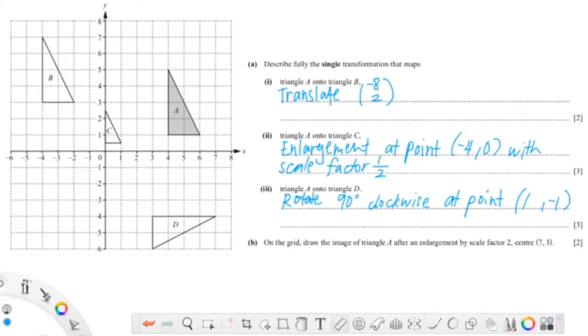So the last question is drawing—enlarging A by the scale factor 2 at point 7, 3. So I plot the point 7 and 3. Now I'm just going to multiply the units. Since there's 2 units down and 1 unit left, you multiply this by 2. So that is 4 units down and 2 units to the left—4, 1, 2—so that's our first point.